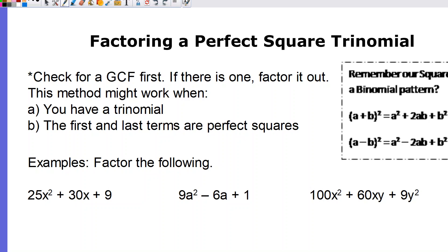If there is a GCF, you have to factor it out. For perfect square trinomials, this method might work — and I stress might, because it's not always going to — but it might work when you have a trinomial where the first and last terms are perfect squares. We also have to check the middle term. Going back to the square of a binomial pattern from multiplying, the key is that the middle term equals 2 times the first part times the second part. So even if the first and last terms are perfect squares, we need to verify that the middle term really is 2 times the first part times the last part. If it is, then we can use this method.